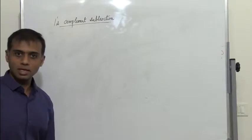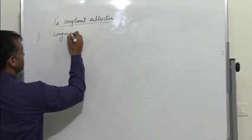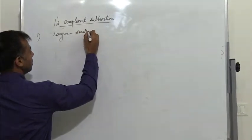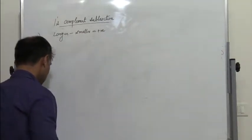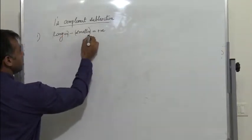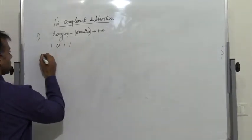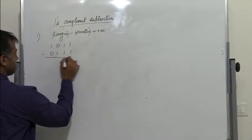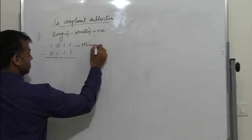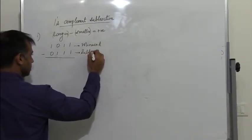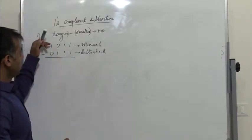Now let us take two different cases. Case 1 is to subtract a larger number from a smaller number where the result is always positive. So let us consider the larger number minus the smaller number, which gives a positive value. Consider 1011 minus 0111. The larger number is called the minuend, whereas the smaller number is called the subtrahend.